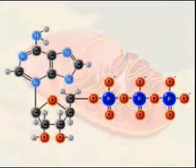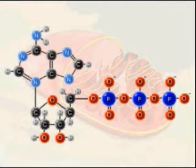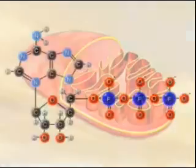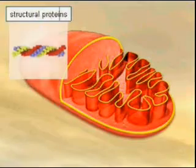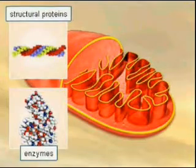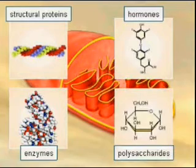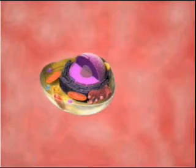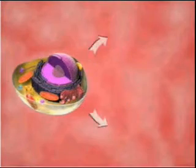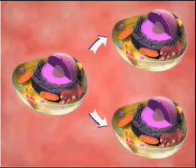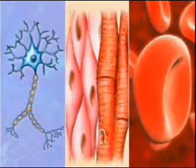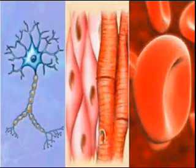The energy that is released during aerobic respiration is used by the cells for the synthesis of structural proteins, enzymes, hormones, polysaccharides, and lipids. This energy is also necessary for the processes of cell division and growth, and also enables cells to perform their specific functions.